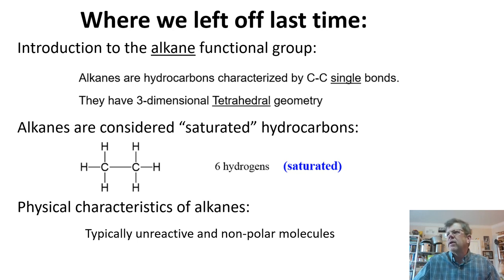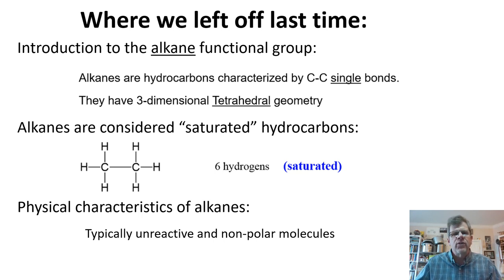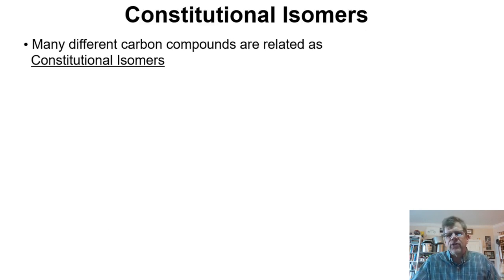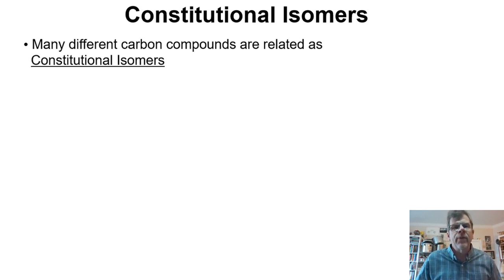Coming from the standpoint of organic chemistry, we look more at structures as opposed to chemical formulas. Since we're looking at structures more often, we have some new ideas to explore. The first of these are what I'm going to call constitutional isomers. Let's think about two different alkane hydrocarbons — two different compounds that have different chemical and physical properties.